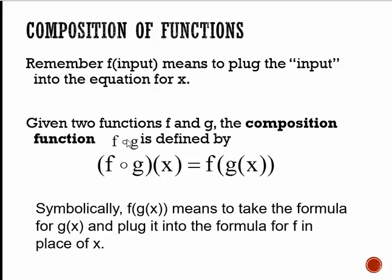The symbol we use is the little circle symbol. We would read this as f of g, or f composed with g of x. Literally, it means f of g of x in nested parentheses notation. The circle allows us to avoid writing the extra set of parentheses. It's this function named f of g, and it literally means to take the formula for g and substitute it into the formula of f.